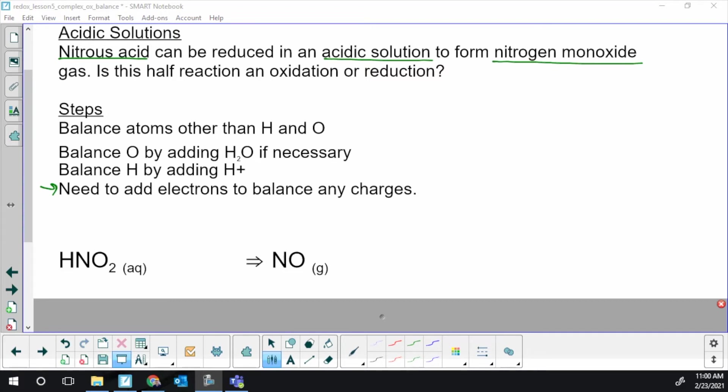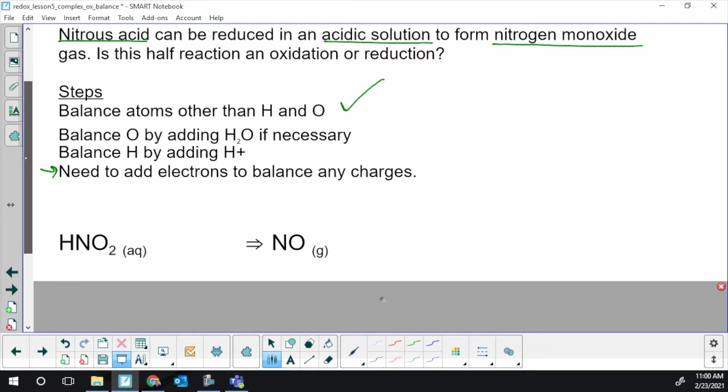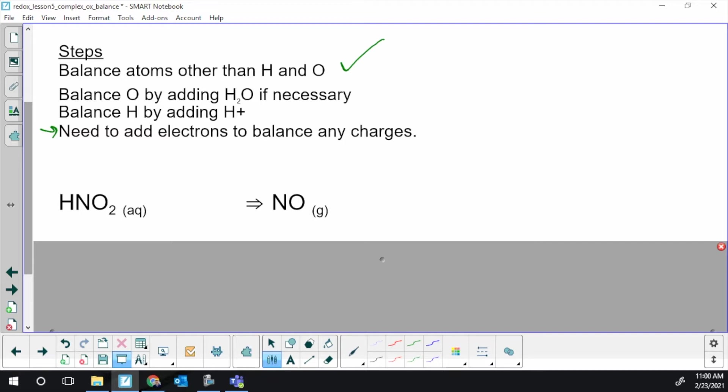Same wording as before: balance atoms other than O and H, so that's just nitrogen. I have one N on each side, so I don't have to do anything new for this step. Next, we're doing the same thing we did with water in complex full reactions: add water to balance O. We've got two oxygen at the beginning in our reactant, only one at the end in our product, so I have to add one water to the product side.